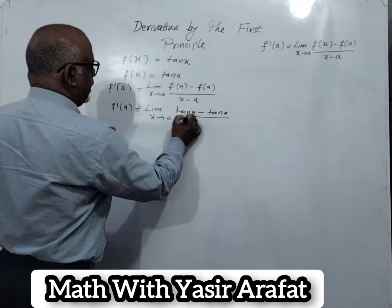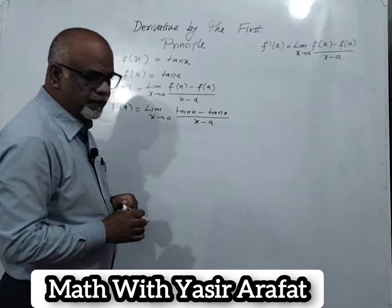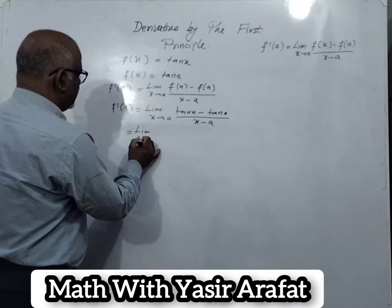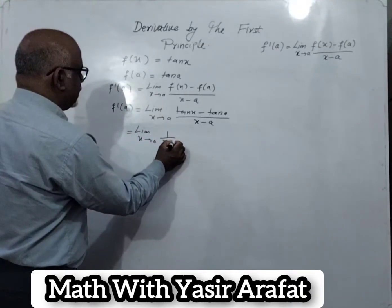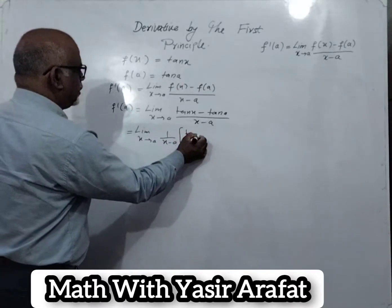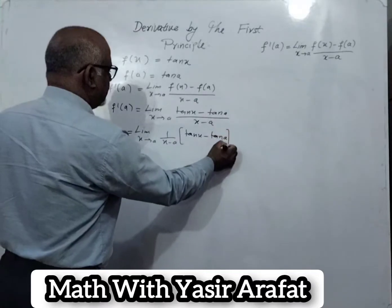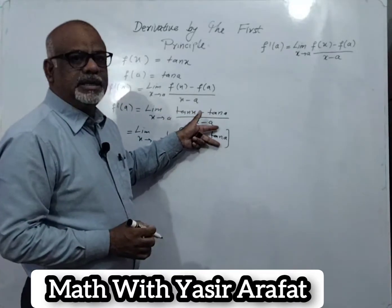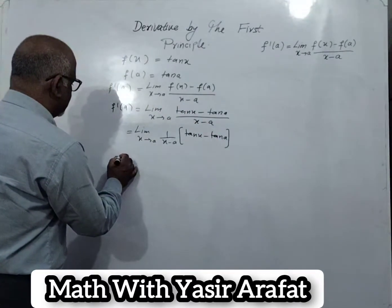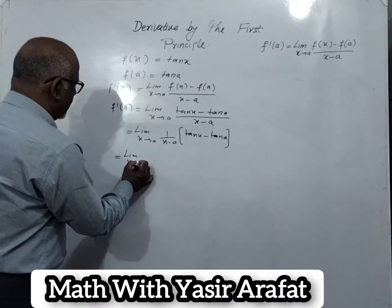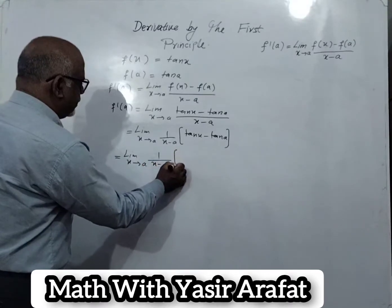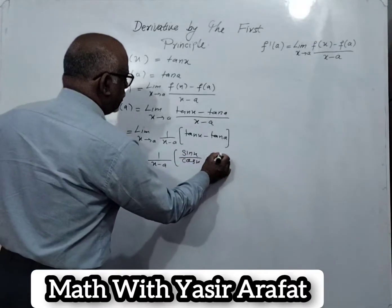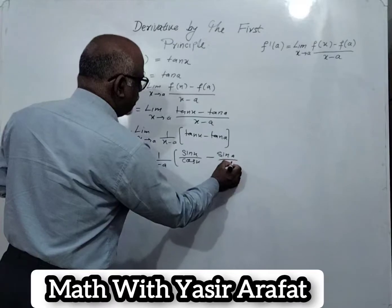So we put the values: limit x tends to a, tangent x minus tangent a, over x minus a. We can write: limit x tends to a, 1 over (x minus a), times (tangent x minus tangent a). Breaking tangent: tangent x equals sin x over cos x, and tangent a equals sin a over cos a. So this is: limit x tends to a, 1 over (x minus a), times (sin x over cos x minus sin a over cos a).